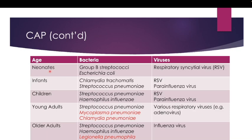In summary, the causative agents vary by age group. In neonates, the common bacterial agents are Group B Streptococci (GBS) and E. coli, both originating from the maternal reproductive tract during delivery. RSV (respiratory syncytial virus) also commonly infects this age group. For infants, the causative bacteria are usually Chlamydia trachomatis and Streptococcus pneumoniae, with RSV and parainfluenza virus as viral agents.